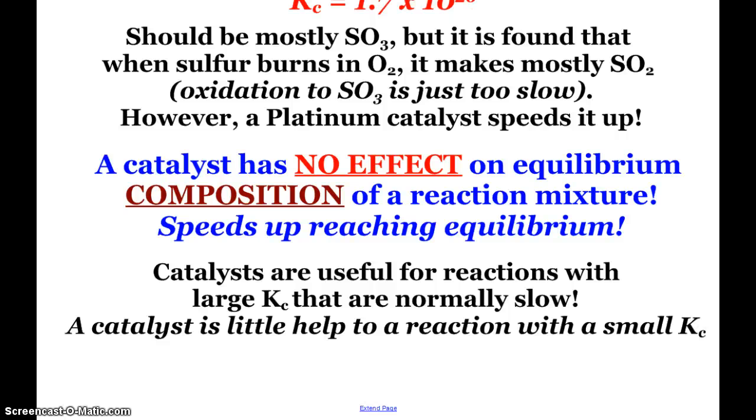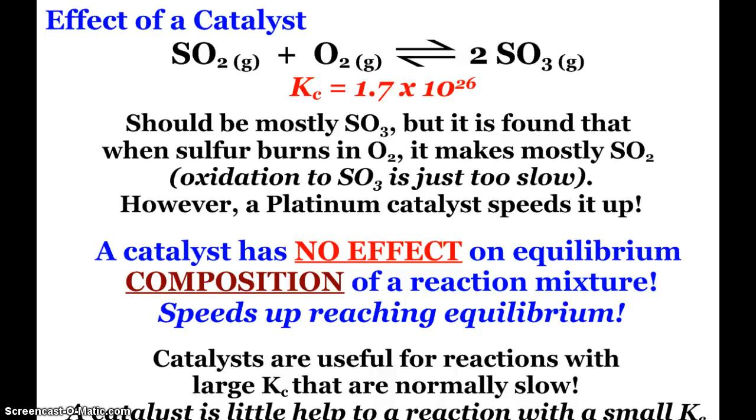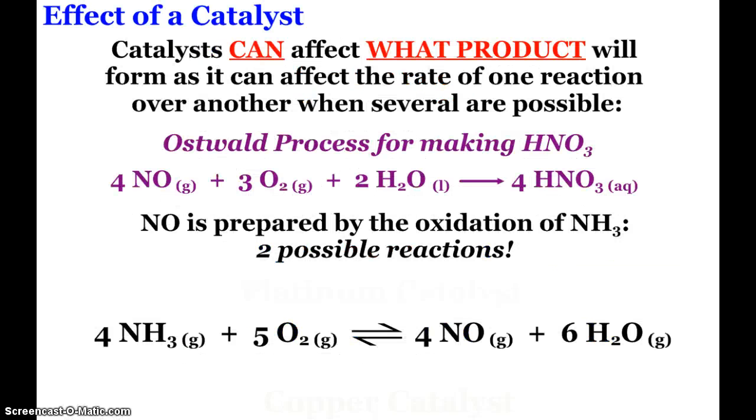As it says, catalysts are useful for reactions with large KC's that are normally slow. So if we have a reaction with a very small KC, where the equilibrium mixture is predominantly reactants, then a catalyst really doesn't help those types of reactions.